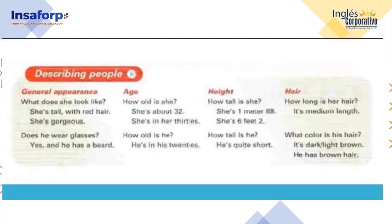To ask about age, we use: How old is she? Or, how old is he? We have some options to answer: She is about 32. She is in her thirties and he is in his twenties. Generalmente vemos una persona y decimos, ah, ha de tener como veinticinco. Then we use 'about.' So, she is about twenty-five. She is about thirty-two. She is in her thirties. He is in his twenties — twenty-one, twenty-two years old.